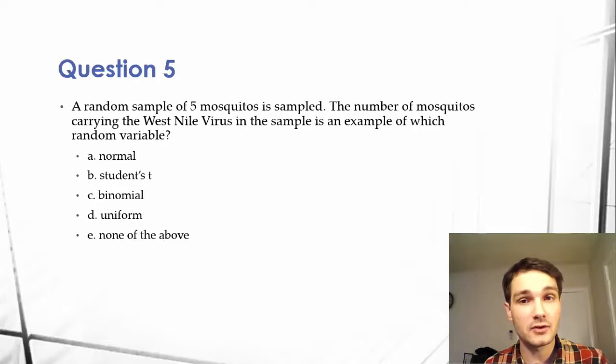A random sample of 5 mosquitoes is sampled. The number of mosquitoes carrying the West Nile virus in the sample is an example of which random variable.